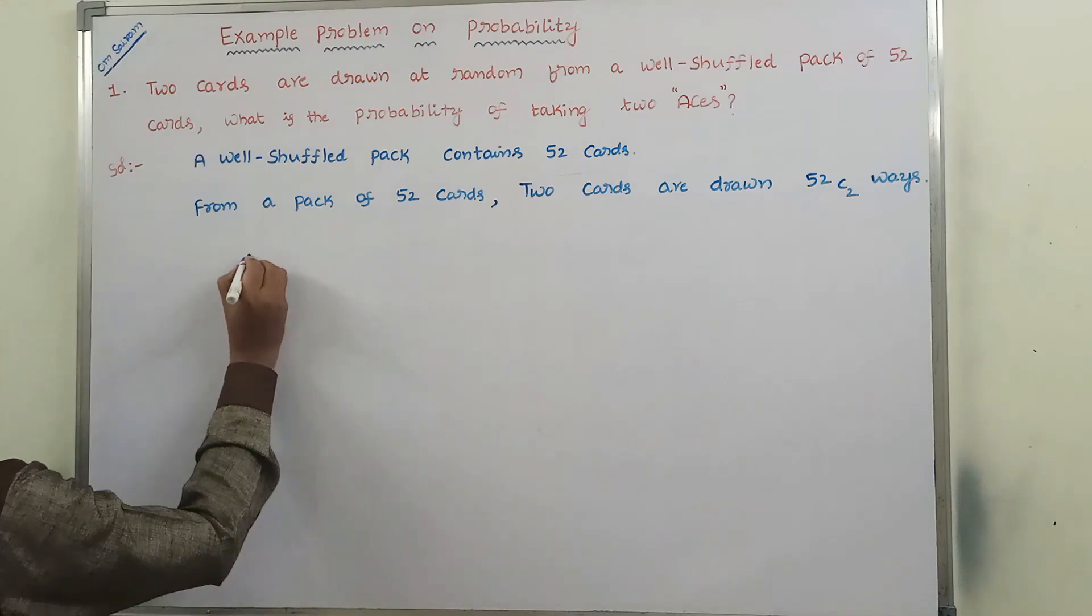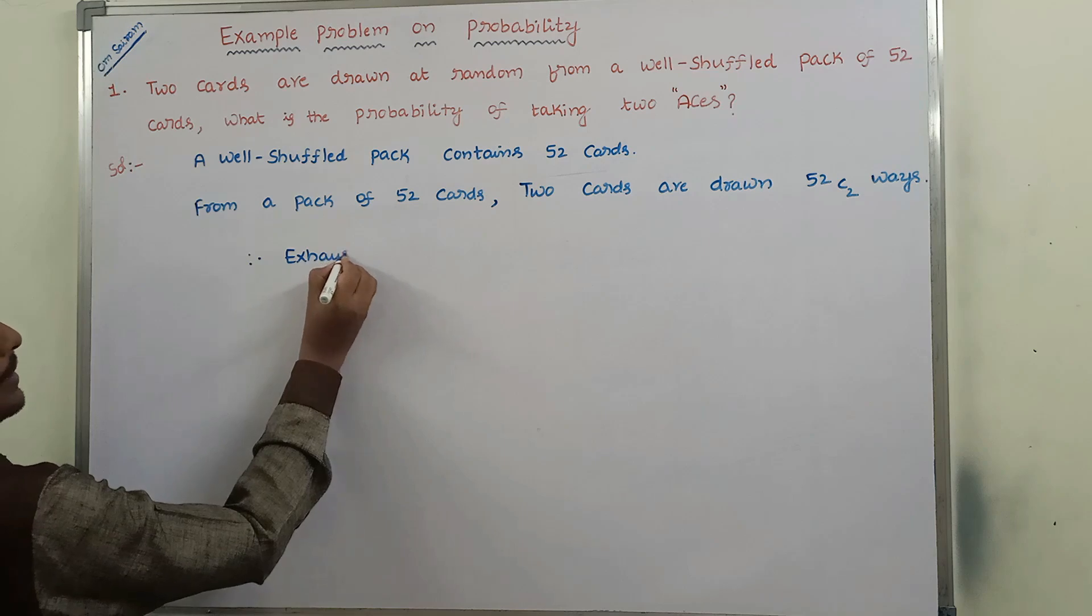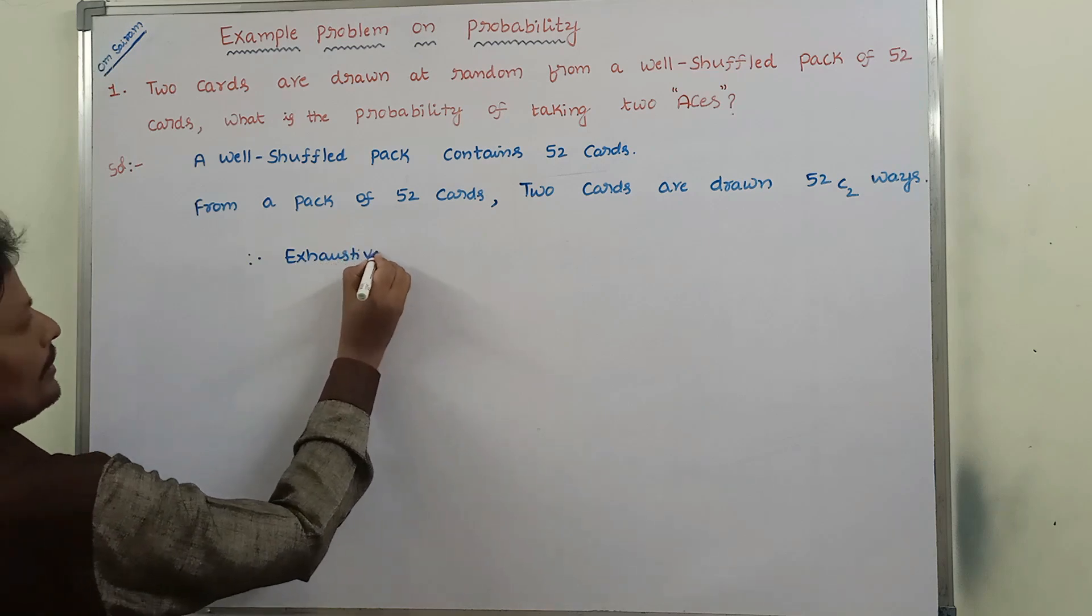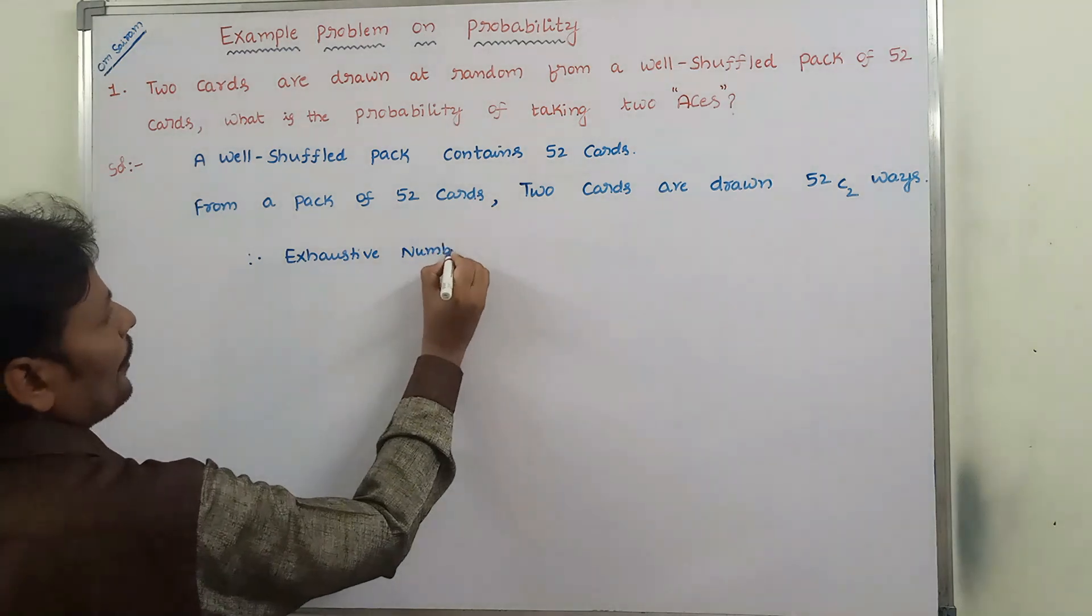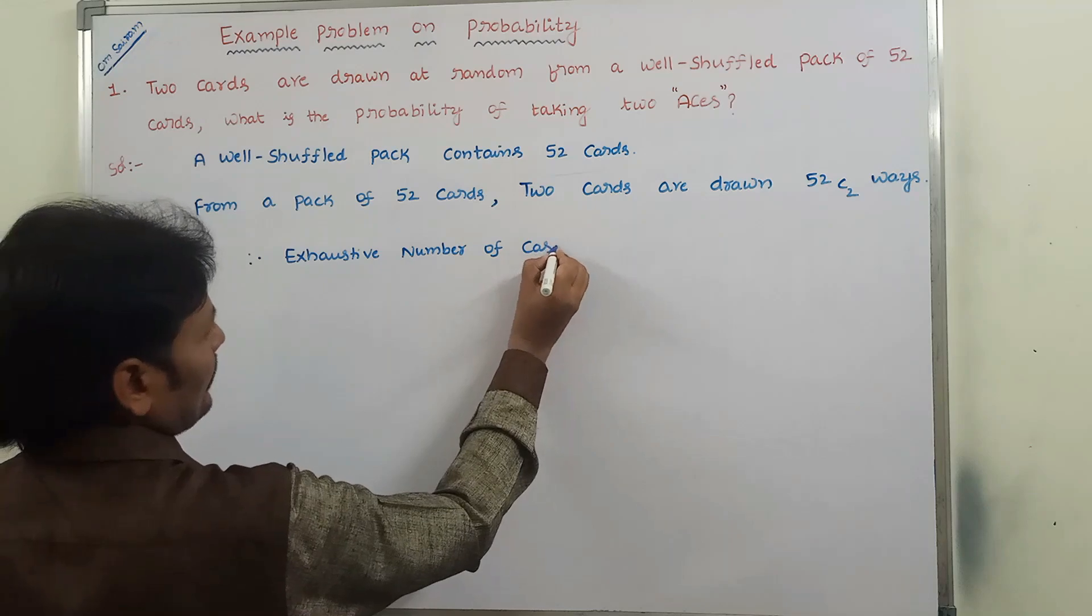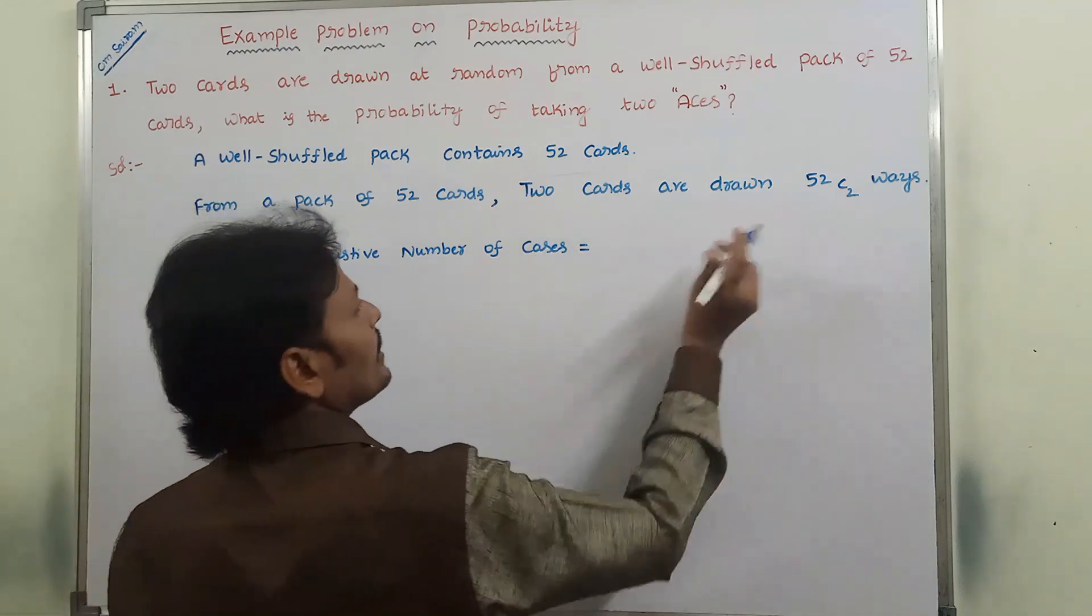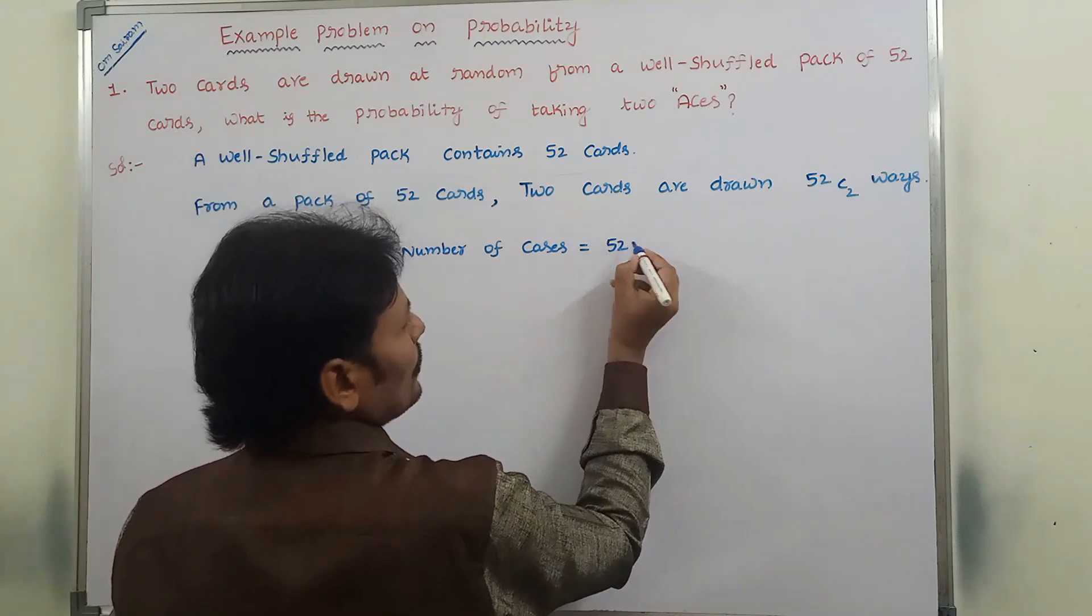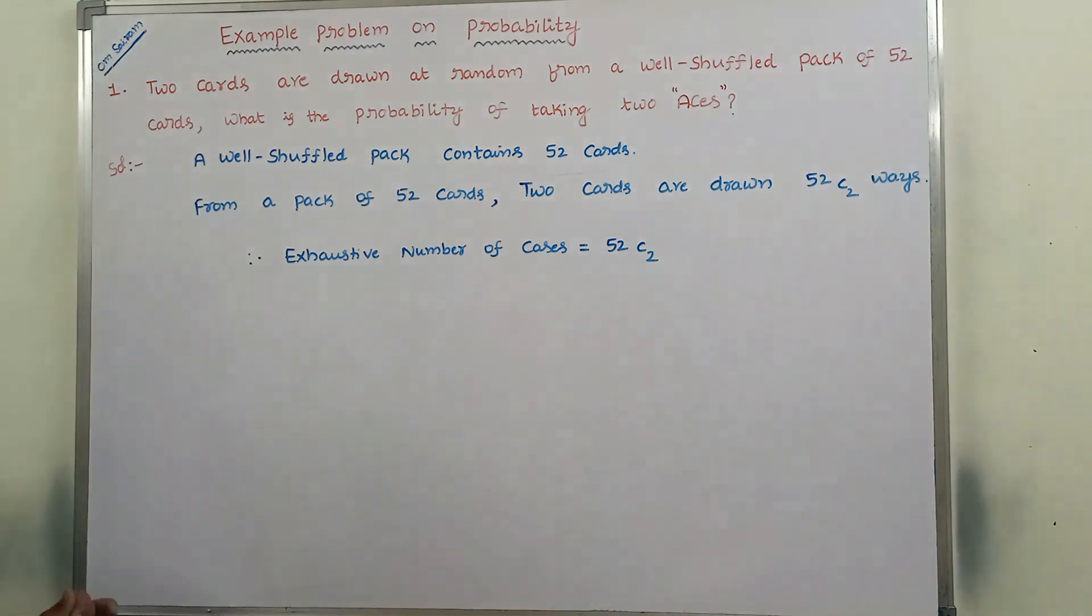Therefore, exhaustive number of cases - that means total number of cases - is 52 C 2 cases.